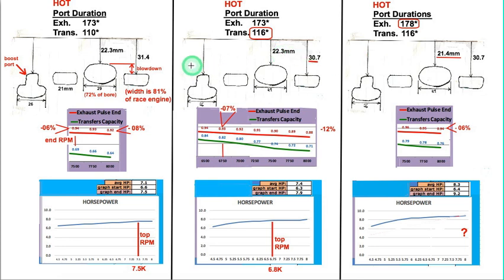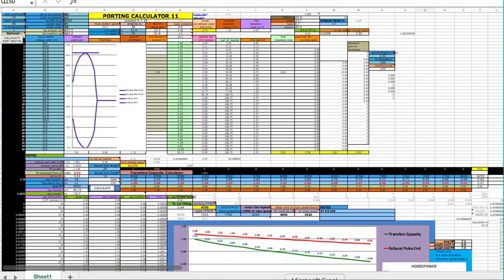This shows three different porting setups. This first one is what I started with. These list the hot durations — my porting calculator calculates the hot durations, meaning the port durations once the engine gets up to temperature. Because the conrod stretches more than the cylinder does, it brings the piston higher, which lessens the durations — usually about two degrees on the exhaust and about three degrees on the transfers. This is my porting calculator.